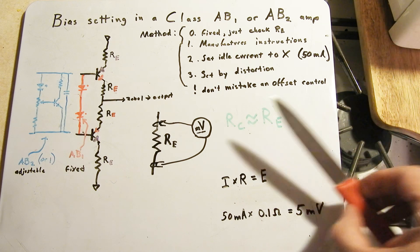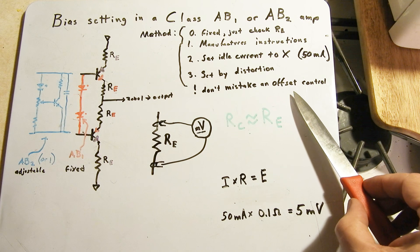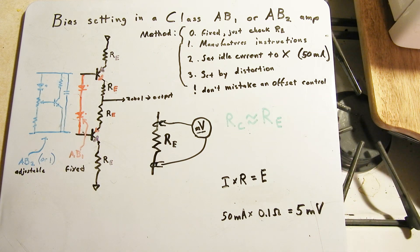And the final caveat I wanted to mention was, don't mistake an offset control for a bias control because you could really mess yourself up. Offset is something you should really check before you even start to even look at bias. Make sure you don't have an offset because that'll throw everything off.